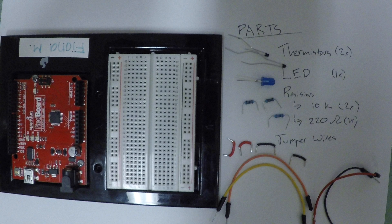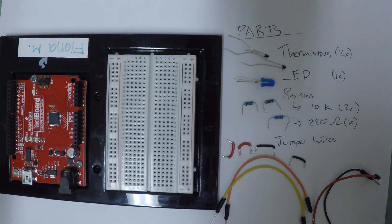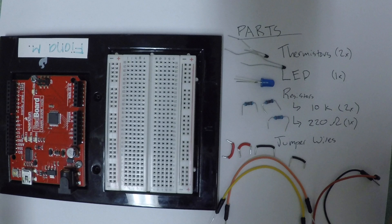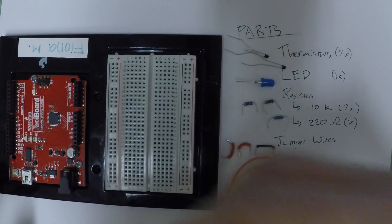Alright, so welcome to the video. Today we're going to talk about how we built the two thermistor data acquisition system. On the right we have a list of parts, including two thermistors which are around 10,000 ohms at room temperature. For that reason we've also used two resistors that are also 10,000 ohms to use in the voltage divider. An LED to warn us when the thermistor temperature difference changes by more than 3 degrees, and an accompanying resistor for that, and then a bunch of jumper wires.